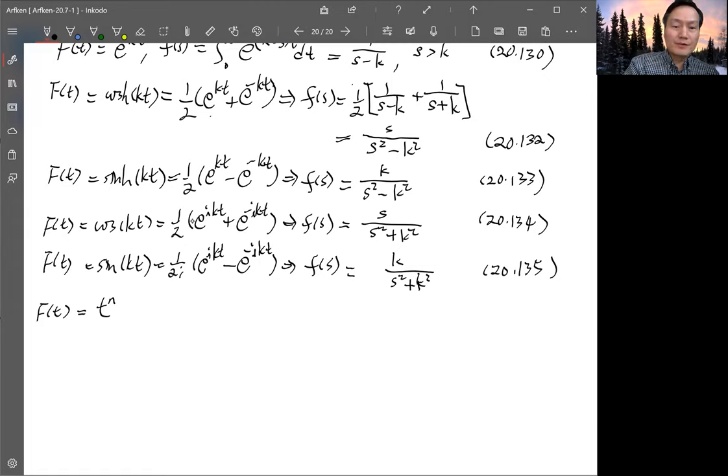This implies F(s) by definition is integrating zero to infinity e^(-st) t^n dt. That integration now for integer n is easier to do, you can do by parts repeatedly. For non-integer n, we actually have seen this before when we talk about gamma function, which is in chapter 13. So let's look up the definition of gamma function first, at least one of the definitions.